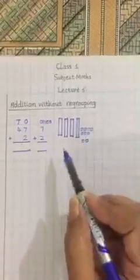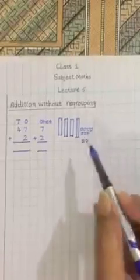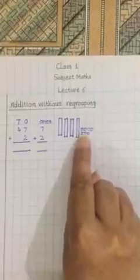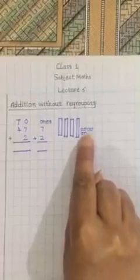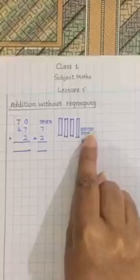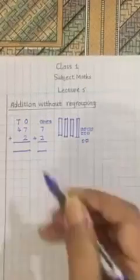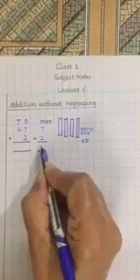Sums always start from the one side. First I will count all the ones. 1, 2, 3, 4, 5, 6, 7, 8, 9. I will write in one's house.